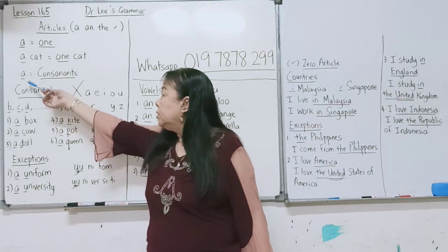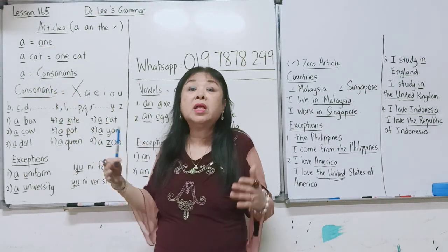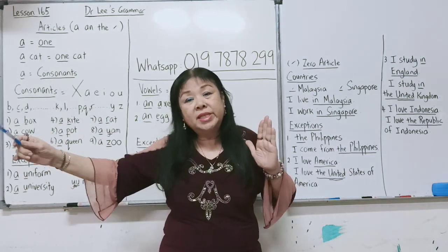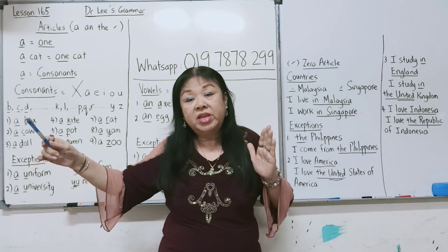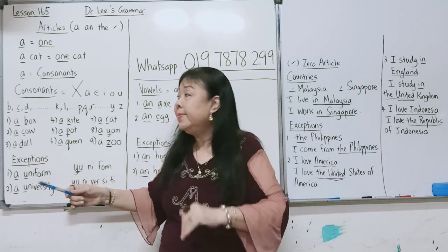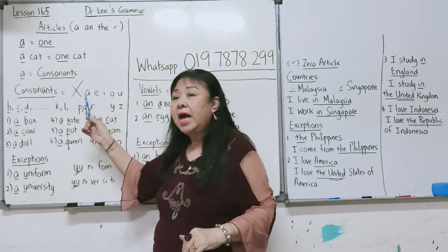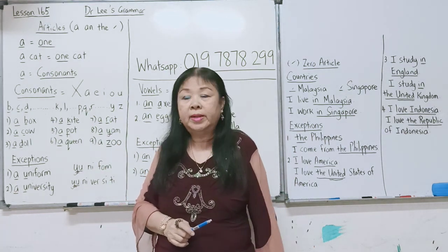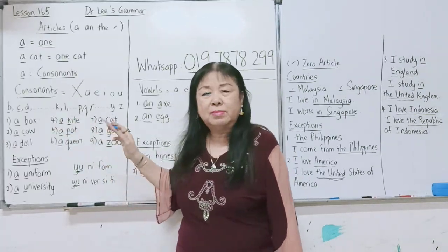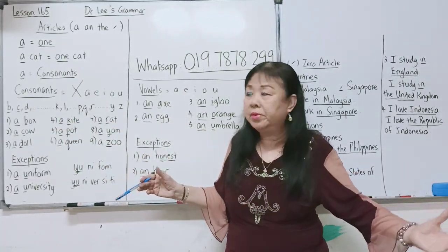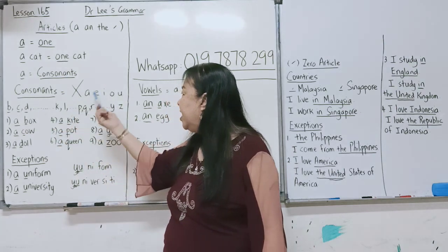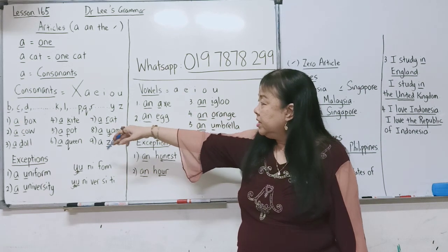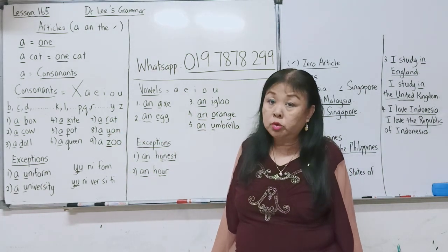We use 'a' for consonants. Consonants are the letters of the alphabet — out of the 26 letters A to Z — that are not A, E, I, O, U. That's all. So it's like B, C, D, K, L, P, Q, R, Y, Z. I've listed out just nine simple examples to show you.